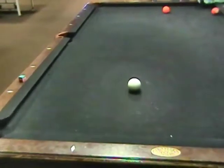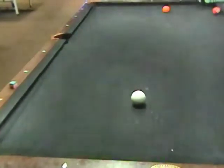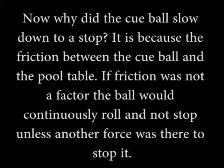Now why did the cue ball stop? It's because of the friction between the cue ball and the pool table. If friction was not a factor, the ball would continuously roll and not stop unless another force was there to act upon it.